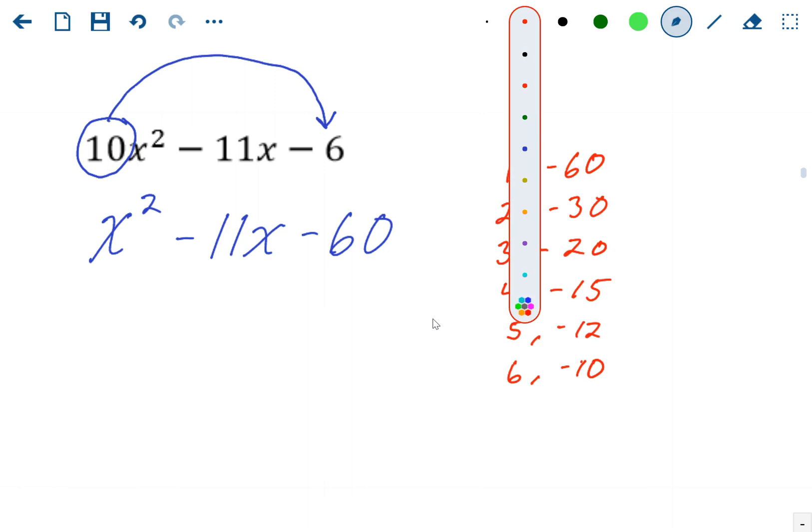All right. Well, which one of these factors also adds to negative 11? So you can go through the list here, and it's going to be this one down here. 4 minus 15 is negative 11. So those are our winners. So when we factor it, we'll write it as x plus 4 times x minus 15.